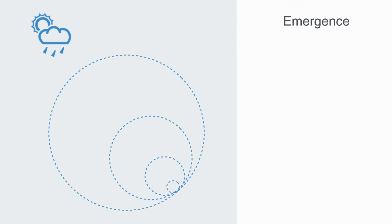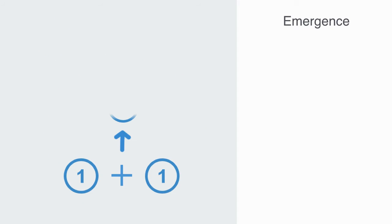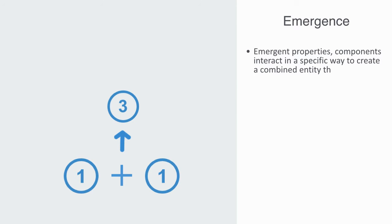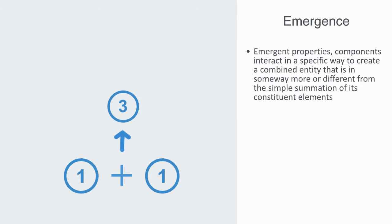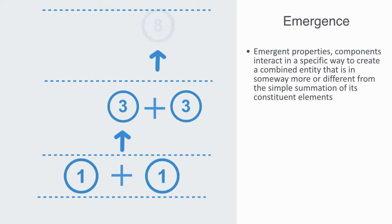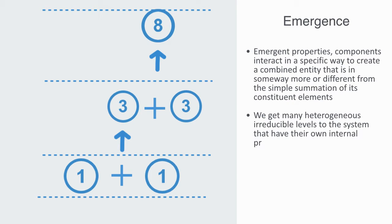Non-linear systems exhibit emergent properties. That is to say, components interact in a specific way to create a combined entity that is in some way more or different from the simple summation of its constituent elements. This is called a synergy, and this synergy results in the emergence of new patterns of organization as we go from the micro to the macro level. Thus we get many heterogeneous, irreducible levels to the system that have their own internal properties, structure and dynamics.